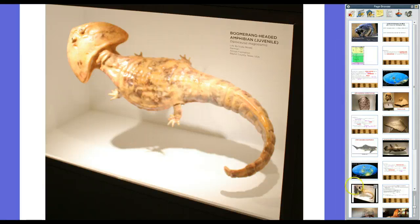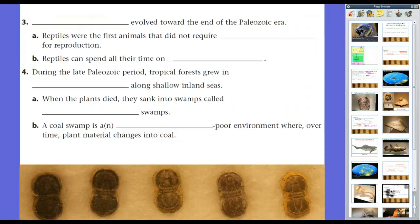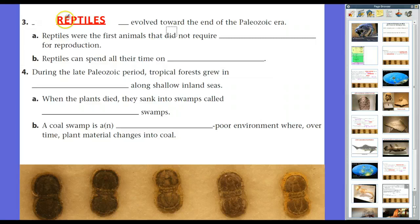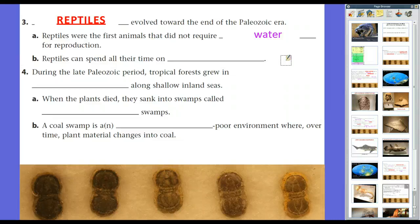As the Paleozoic Era moved on toward the end — well into the Permian Period — we saw the introduction of reptiles. By the end of the Paleozoic Era, reptiles were the most complex life forms on Earth. Reptiles were the first animals that did not require water for reproduction; they could lay eggs on land. As a result, animals didn't have to stay close to water and could spread out. By the end of the Paleozoic Era, you started to see life animals all over the land.